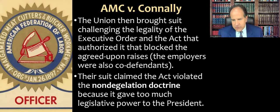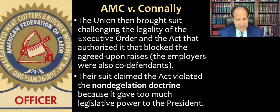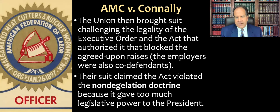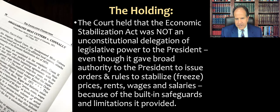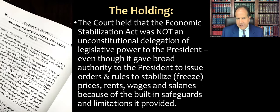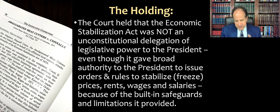The union didn't just sue their employers — though they sued them too — but challenged the legality of the executive order and the act that authorized it, which had blocked the agreed-upon raises. The employers were also co-defendants but are not named in the caption. The union's suit claimed that the act violated the non-delegation doctrine because it gave too much legislative power to the president. The court held that the Economic Stabilization Act was not an unconstitutional delegation of legislative power, even though it gave broad authority to the president to issue orders and rules to stabilize or freeze prices, rents, wages, and salaries. The reason was the built-in safeguards and limitations in the act.